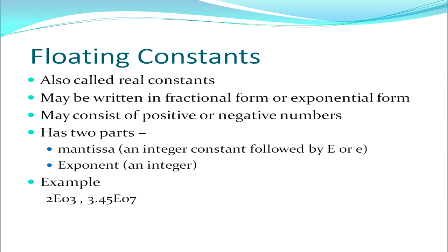These are white space or non-graphic characters which are used in the program by using escape sequences. Next, we move on to floating constants. Floats are decimal numbers. Each float number, or real constant, has two parts: a fractional form and an exponential form. They can be positive or negative. The mantissa part is followed by a capital E or small e, while the exponent is an integer. For example, 2e03 or 3.45e07 — in 2e03, 2 is the mantissa part and 03 is the exponent. In 3.45e07, 3.45 is the mantissa part and 07 is the exponent.